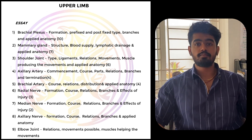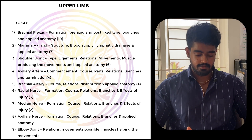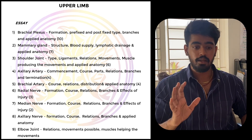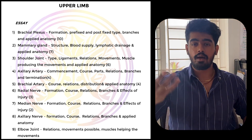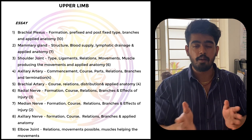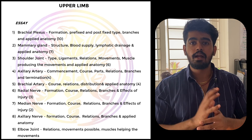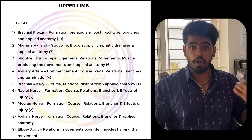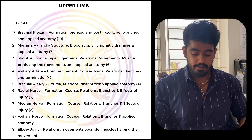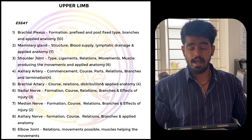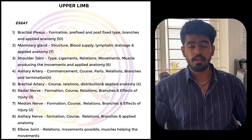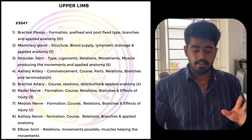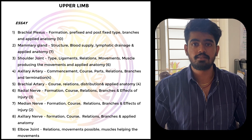For upper limb, you have to know the different types of brachial plexus — that is prefixed, postfixed, and so on. You have to draw the exact anatomy and also the applied anatomy. In the comment section, tell me what is the applied anatomy of brachial plexus. Then mammary gland, shoulder joint — very important, asked quite a lot of times — axillary artery, brachial artery, radial nerve, median nerve, axillary nerve and elbow joint. These can be the possible essay questions.